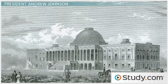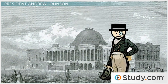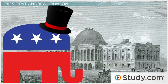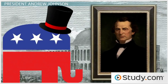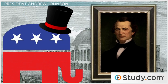When some former Confederate leaders were elected back to their old positions in Congress, the radical Republican majority refused to seat them. Many Americans must have shared their views, since Republicans won heavy majorities in both houses of Congress in the 1866 midterm elections — enough votes to override a presidential veto. And with this mandate, they aggressively pursued their own version of Reconstruction in defiance of the president. Presidential Reconstruction was over.